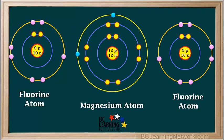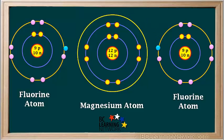Now we'll bring a magnesium atom and two fluorine atoms close together. Magnesium's two valence electrons will move to the fluorine atoms. Magnesium's two valence electrons have now been transferred to the valence shells of the two fluorine atoms.